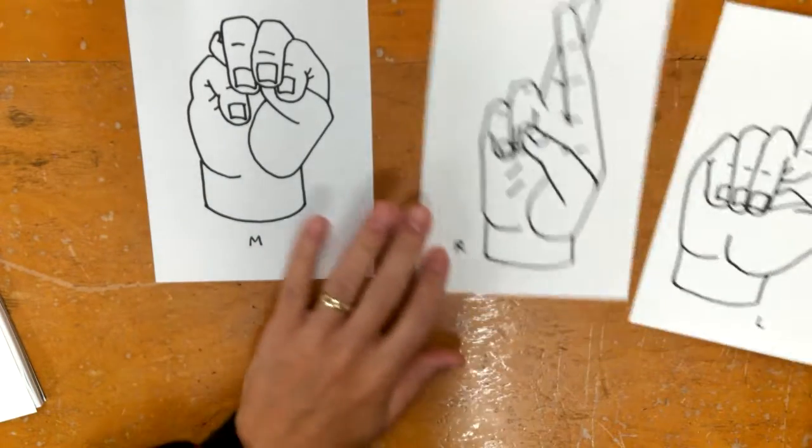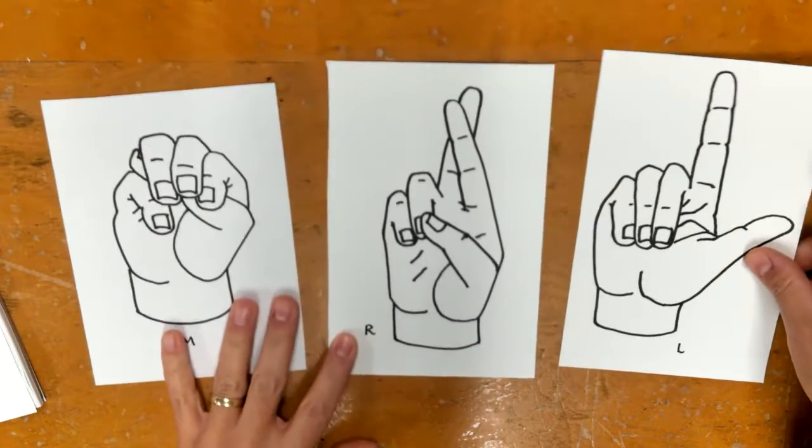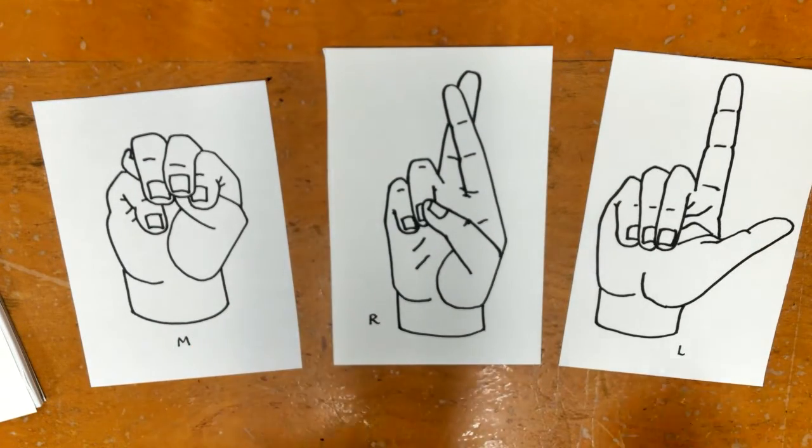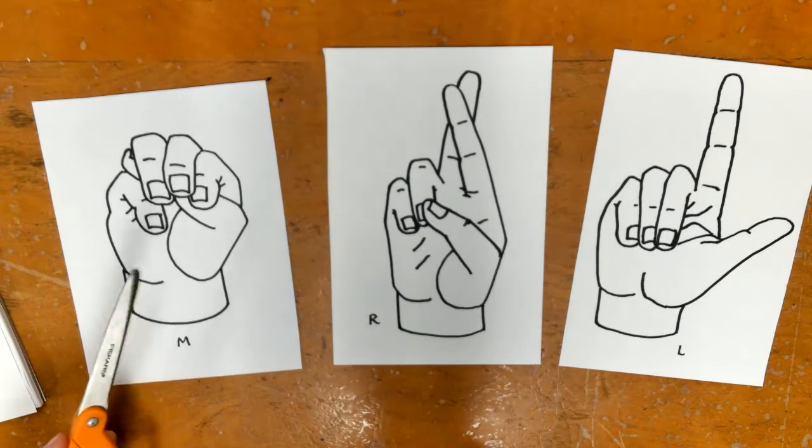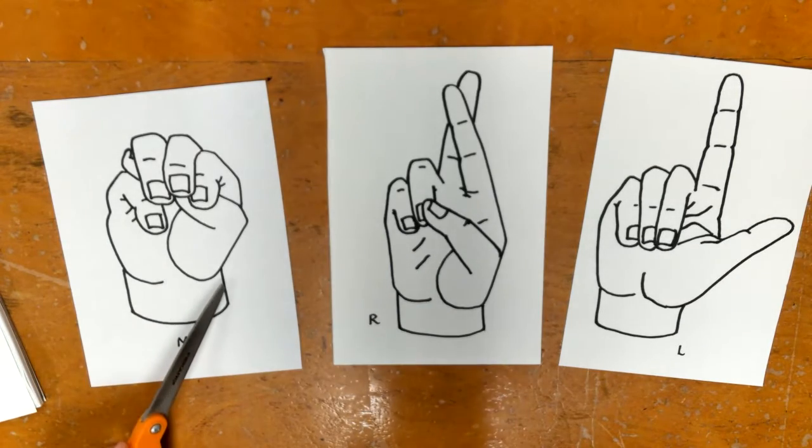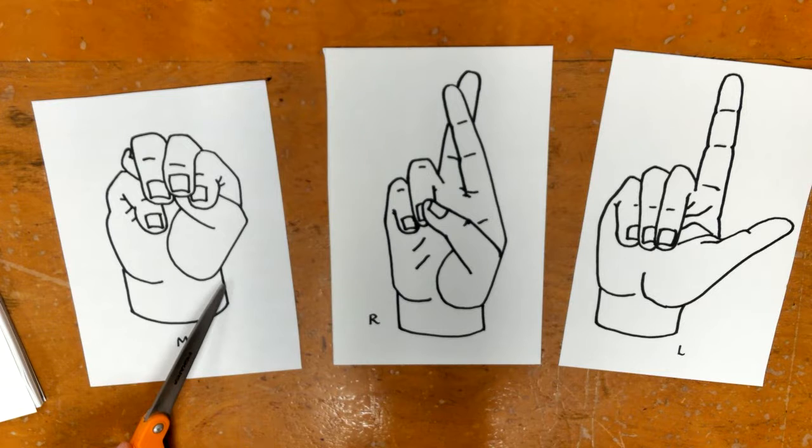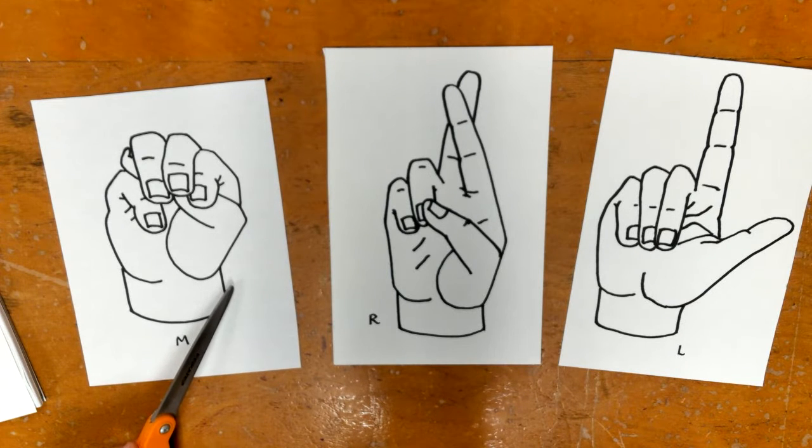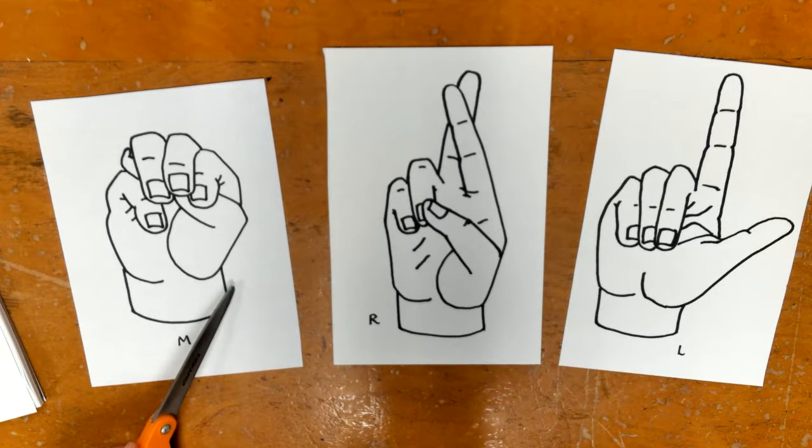Now what we need to do is we're going to cut them out and we're cutting and leaving the black lines but we are not leaving any of the outside white paper.